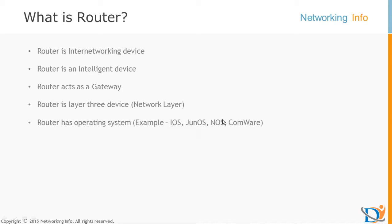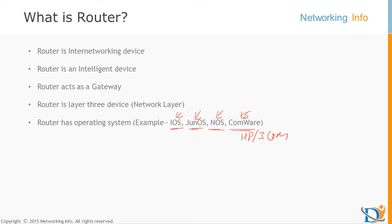Router has an operating system. We have modular and non-modular routers. All types of routers have operating systems. Some well-known ones are IOS from Cisco, Junos from Juniper, VRP from Huawei, and Comware from HP — which was originally from 3Com. There are a lot of operating systems across different router vendors.